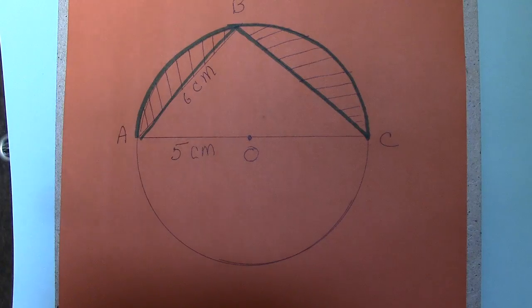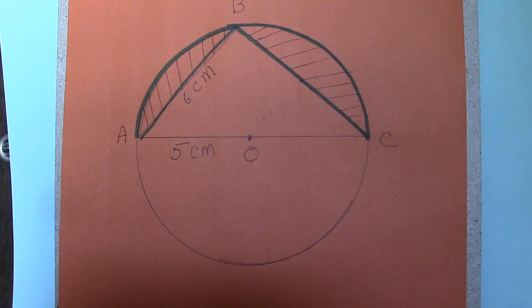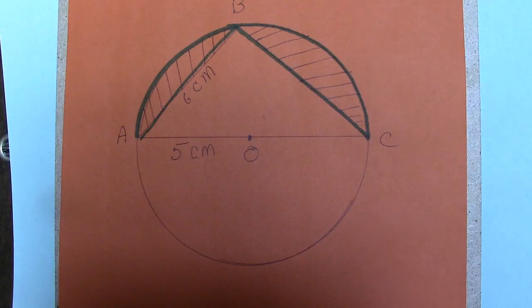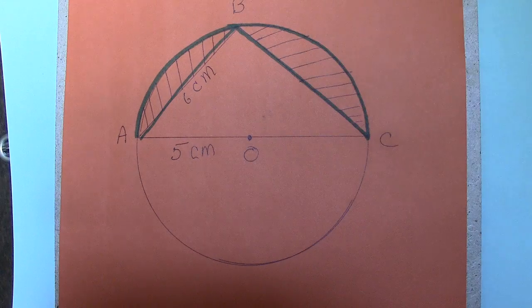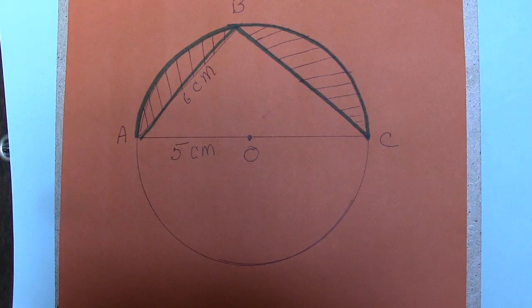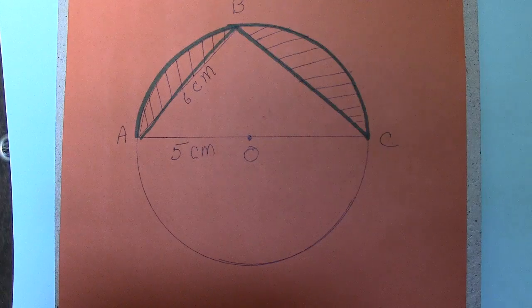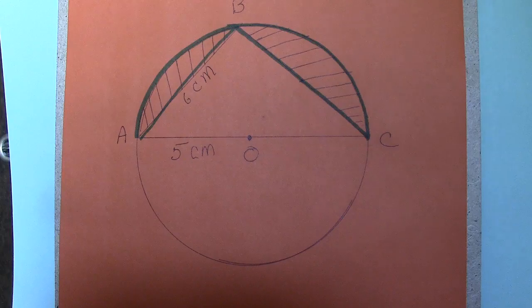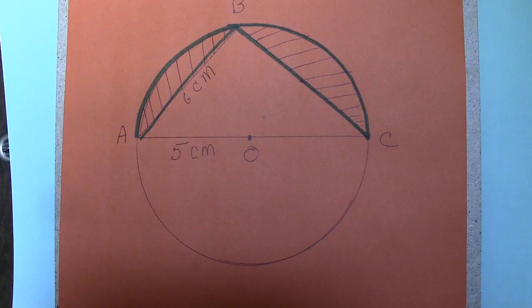So the perimeter of the shaded region is the arc ABC plus the side AB plus the side BC. Now the angle ABC is 90 degrees. It is given in the problem. But even if it was not given, you should know that any triangle that is drawn on the diameter with its vertex on the circumference, or any triangle that is inscribed on the diameter, is a right angle triangle.